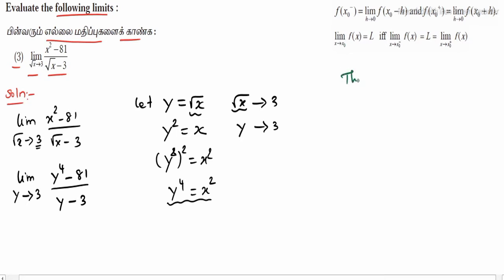3⁴ is 81. That is limit x tending to a, x to the n minus a to the n divided by x minus a is equal to n into a to the n minus 1.